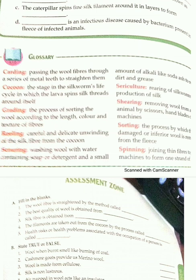Rearing of silkworm for the production of silk is called sericulture. Then shearing — removing wool from an animal by scissor, hand blade, or electric machine is called shearing.